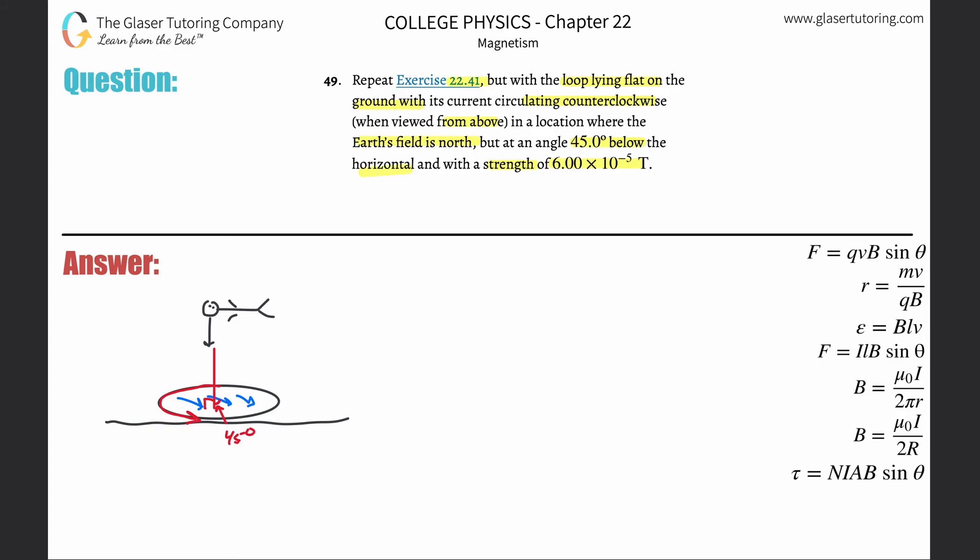Now let's calculate the torque. Torque is going to be equal to the number of loops multiplied by the current multiplied by the area of that loop multiplied by the strength of magnetic field multiplied by the sine of the angle.